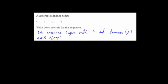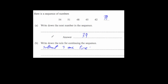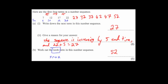So that's how you describe the rules of sequences — you describe what's happening. For the sequence beginning with 4, the rule was subtract 3 each time. For the last sequence, the rule for continuing was subtracting 3 each time, and so on.